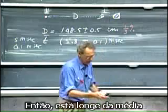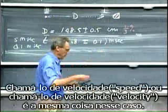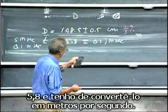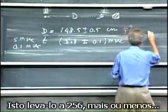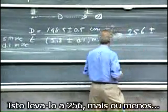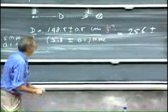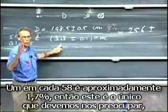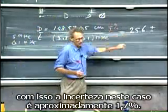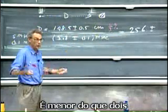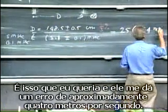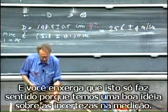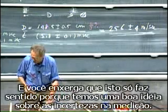So out comes the average speed — or call it velocity; it's the same thing in this case. 148.5 centimeters divided by 5.8 milliseconds, converting to meters per second, gives 256 meters per second. The distance has a one-third percent error, which is negligible. One out of 58 is about 1.7 percent, so that's the only uncertainty we have to worry about — about 1.7 percent, which is less than two percent. That gives an error of about four meters per second. This result is only meaningful because we have a good idea about the uncertainties in the measurement.